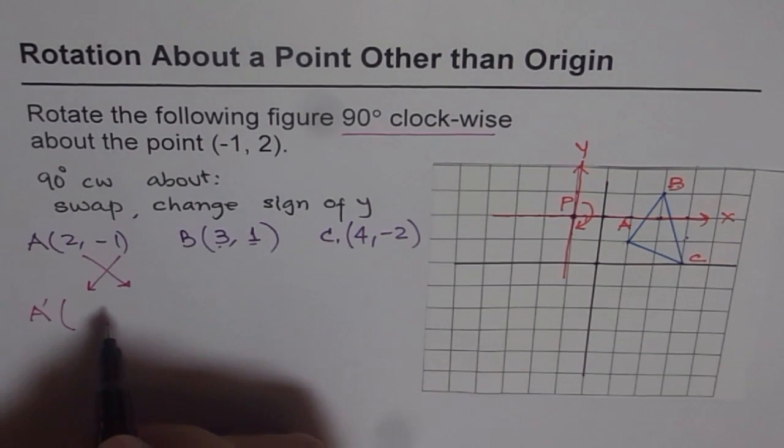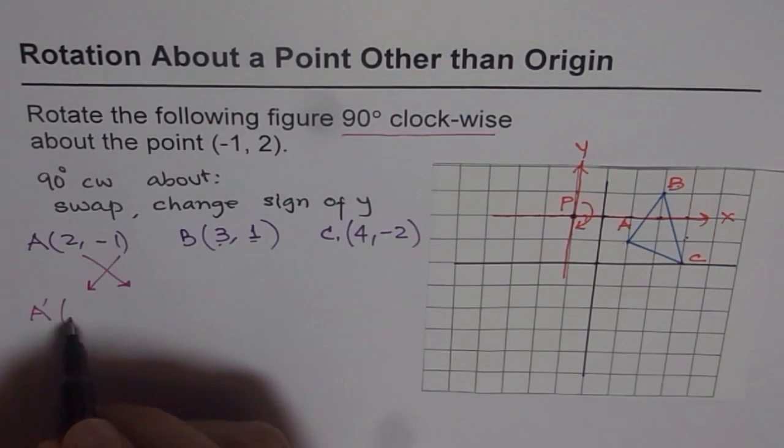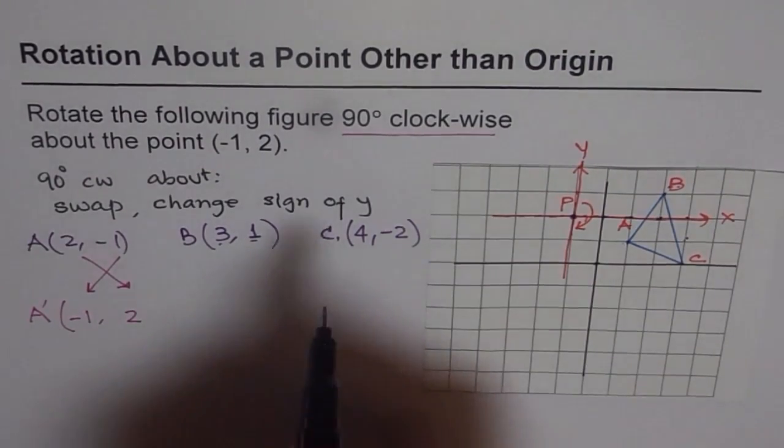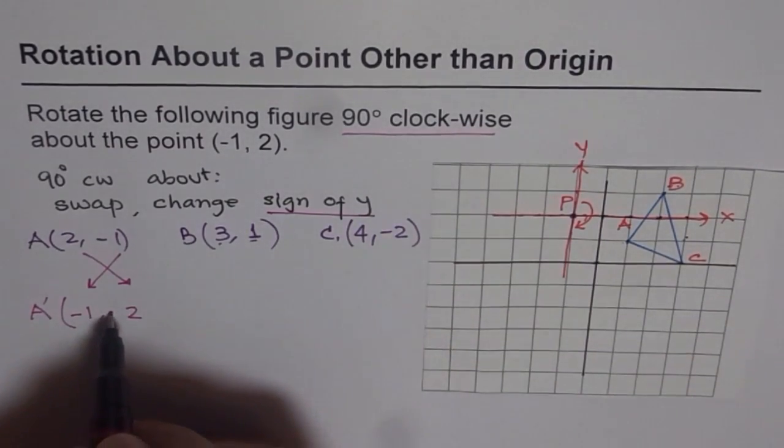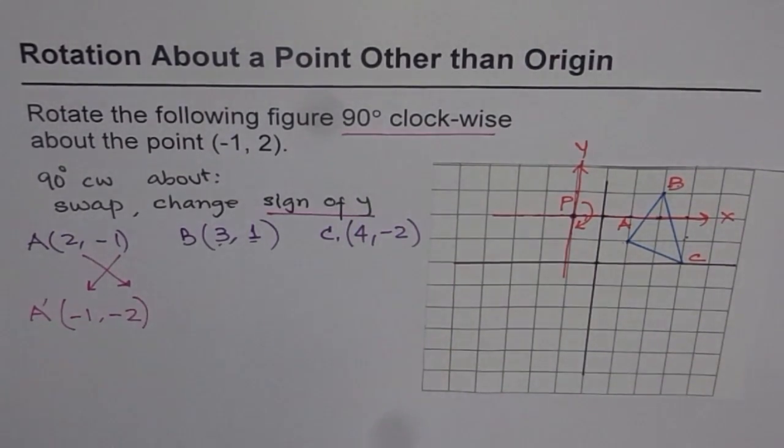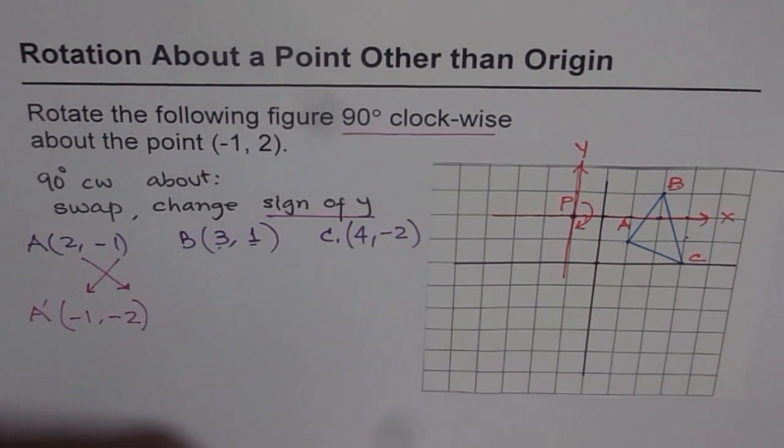So what is A' now for us? So let us interchange, that is minus 1 and 2 and then change sign of Y, right? Sign of Y is plus, we will make it minus. That's it. Do you see that?